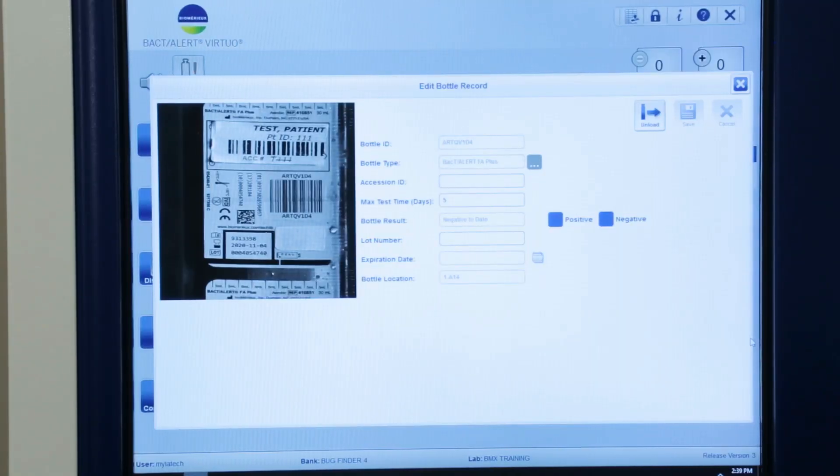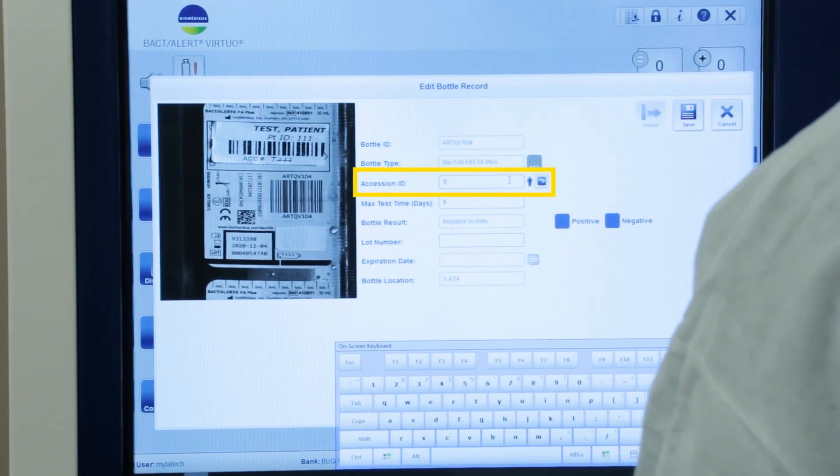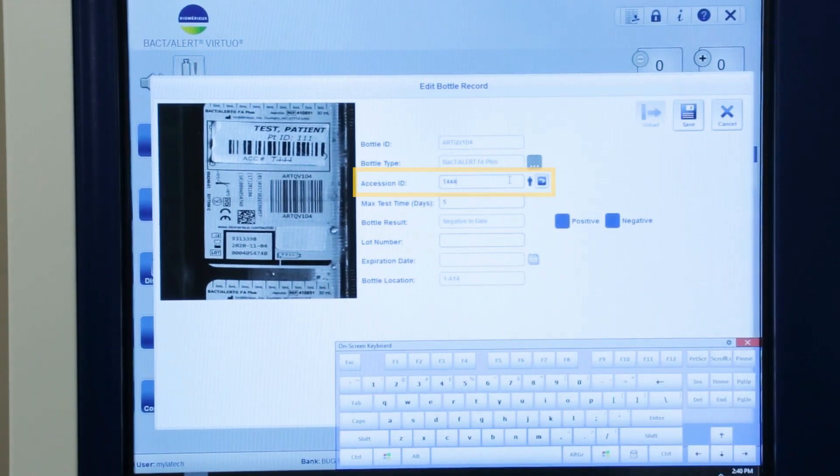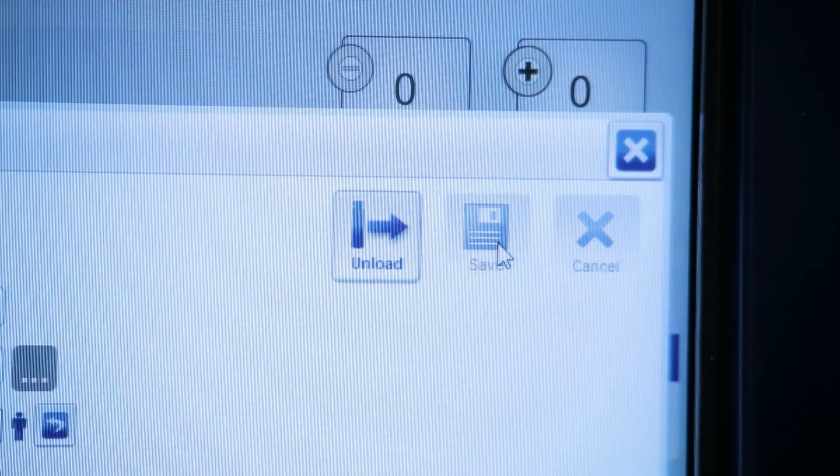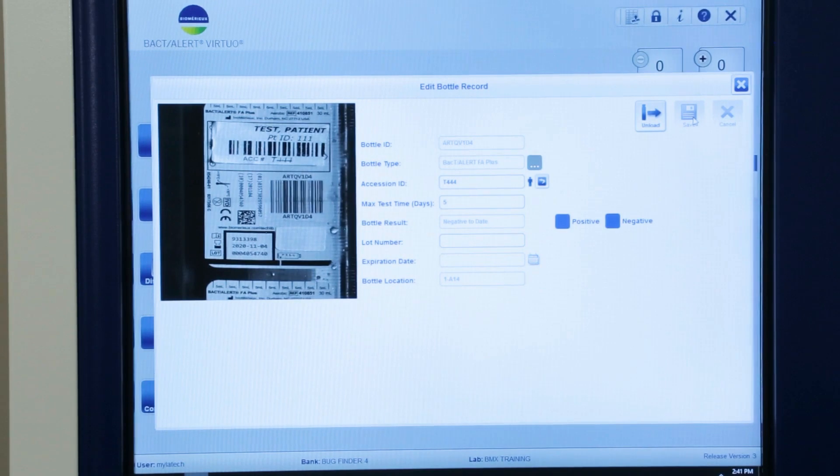From the Edit Bottle Records screen, enter an accession ID in the appropriate field if visible in the image and select Save. This may be done by scanning an additional accession label or typing in the information using the wireless keyboard or touch screen keyboard.